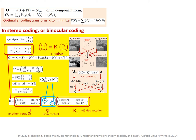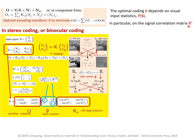We have seen the application of the efficient coding transform in stereo or binocular coding. The optimal coding transform K, which minimizes the objective, should depend on the visual input statistics — in particular, the probability distribution of the signal S — because both terms depend on such statistics. In particular, it depends on the signal correlation matrix RS, which in stereo coding is this matrix RS.